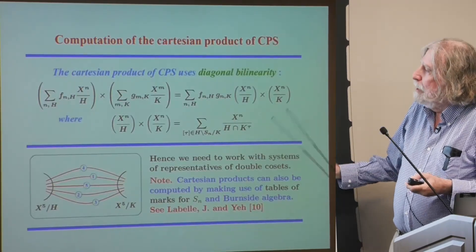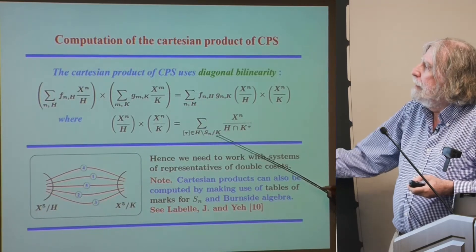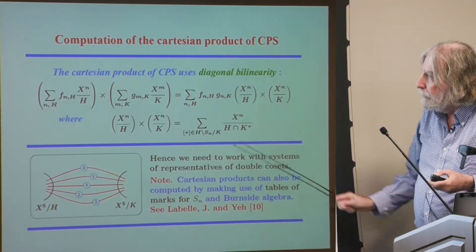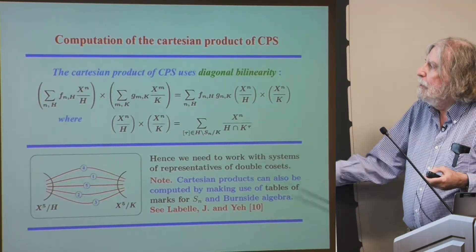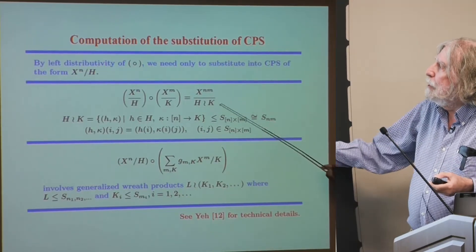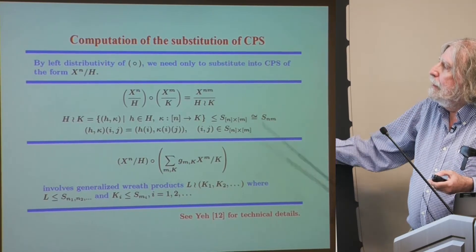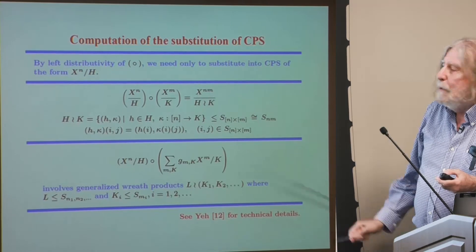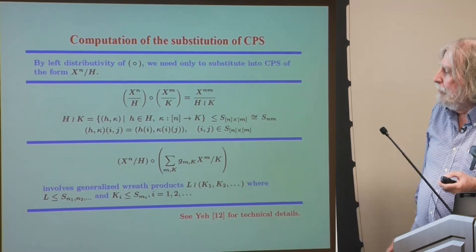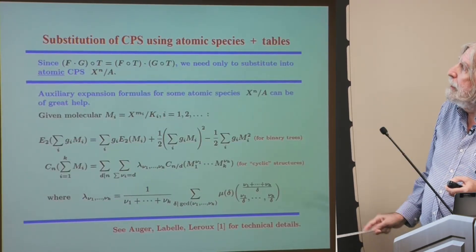This is a table of atomics and a table of their derivatives. An atomic may have a sum as its derivative — that sum may not itself be atomic. You teach Maple how to differentiate all the atomics, and then you have this complete table. It is easy to program. The cross product can be used by taking double cosets. The substitution takes into account the wreath product and general wreath product.